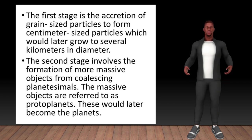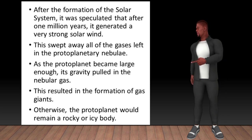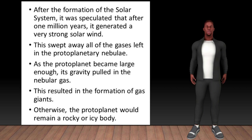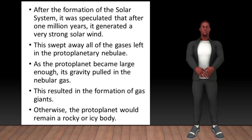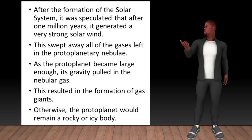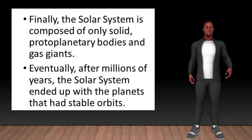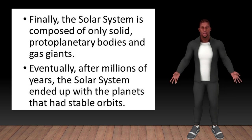After the formation of the solar system, it was speculated that after one million years it generated a very strong solar wind. This swept away all of the gases left in the protoplanetary nebulae. As the protoplanet became large enough, its gravity pulled in the nebular gas. This resulted in the formation of gas giants; otherwise, the protoplanet would remain a rocky or icy body. Finally, the solar system is composed of only solid protoplanetary bodies and gas giants. Eventually, after millions of years, the solar system ended up with the planets that had stable orbits.